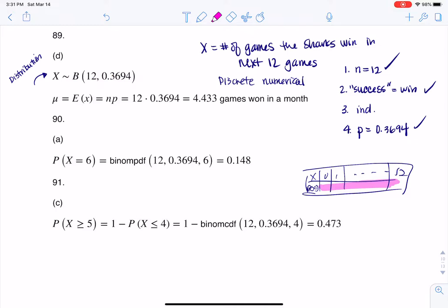But this question for 89 asked us for the expected value, the expected number of games won. And anytime you hear expected, they're asking you to find an average, or a mean. And if we look at the binomial formula for average, it's n times p. So you see me doing 12 times about 37%, meaning that in the next 12 games, I think the sharks are going to win about 4.4 of them.